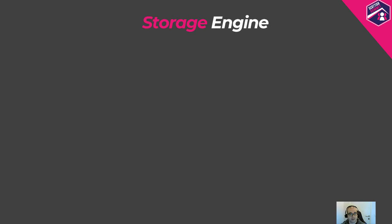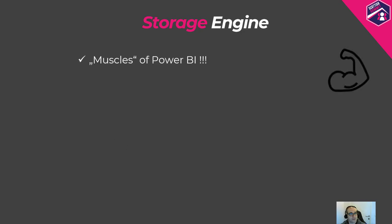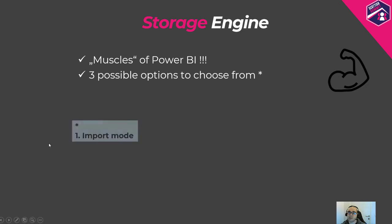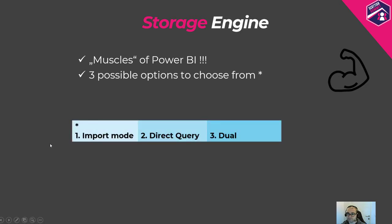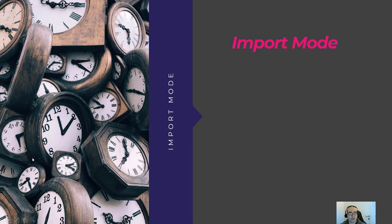Once the query has been generated and executed by the Formula Engine, the Storage Engine comes into the scene. It physically goes through the data stored within the tabular model — which is VertiPaq — or goes directly to a different data source like SQL Server if you're using DirectQuery storage mode. We can think of the Storage Engine as the muscles of Power BI. When it comes to specifying the storage engine for a table, there are three possible options: import mode, DirectQuery mode, and dual mode.